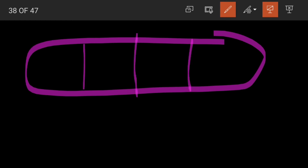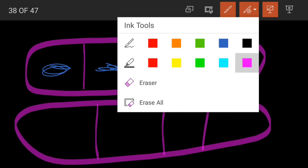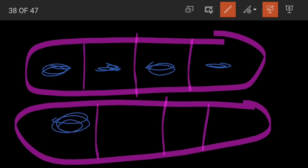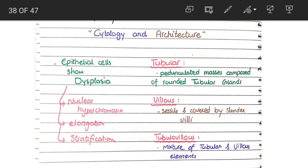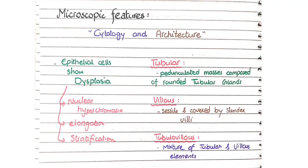Nuclear stratification can be understood as follows: normally, the nuclei of adjacent epithelial cells lie in a single plane. In colonic adenomas, however, the nuclei are not in a single plane but in a haphazard orientation — one nucleus above the plane, one below. This abnormal stratification is a characteristic feature of epithelial dysplasia in colonic adenomas, along with nuclear hyperchromasia and nuclear elongation.